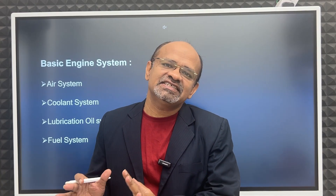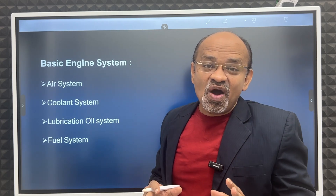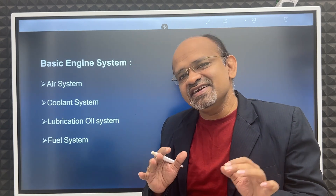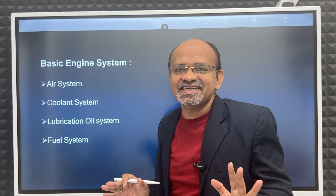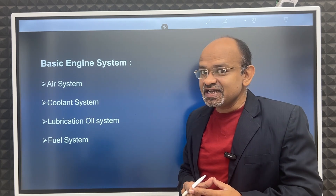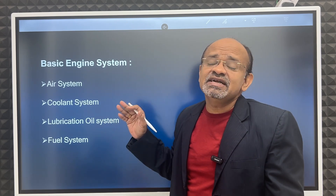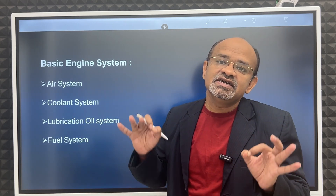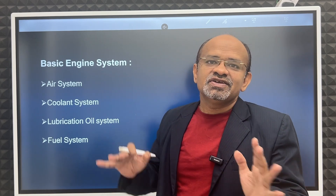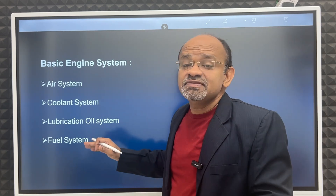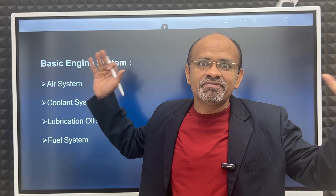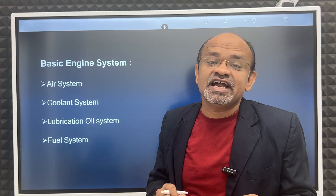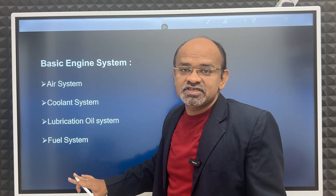Now we know how both parts work — the engine from the last lecture, and the alternator from today. Next, we will understand the systems inside the diesel engine, which is a very complex system. The main systems are: the air system, coolant system, lubrication oil system, and fuel system. These systems are the same whether it is a car engine, a generator engine, or any larger machine.